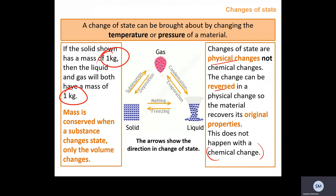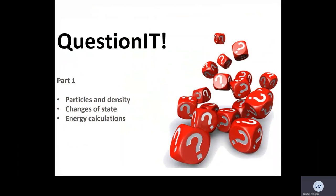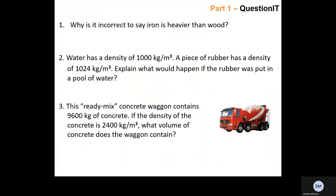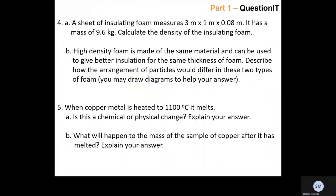The arrows show the direction of each change of state, and it's important to know them. Two you might not know: sublimation is going straight from a solid to a gas, and deposition is going straight from a gas to a solid.